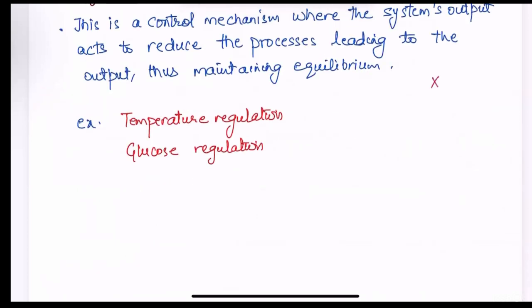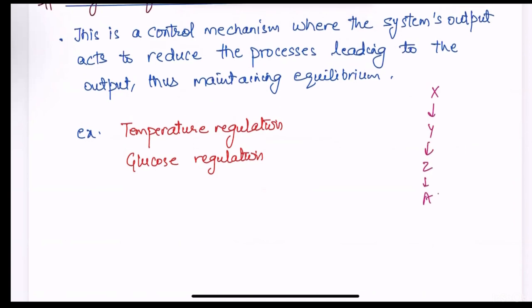If there is a x secretes y, y secretes z and z secretes a, whenever the concentration of a will be high, it will start inhibiting its own synthesis. This is called negative feedback mechanism.